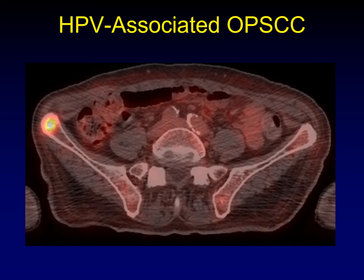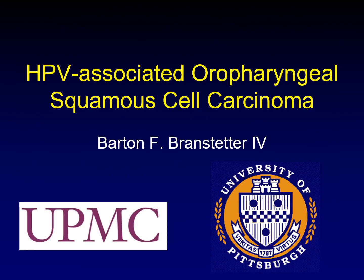Another unusual behavior of HPV-associated oropharyngeal squamous cell carcinoma is distant hematogenous spread to bone. This example shows disease in the pelvis as the only manifestation outside of T1N1 disease in the neck. There are a variety of ways that HPV-associated oropharyngeal squamous cell carcinoma differs from traditional HPV-negative oropharyngeal squamous cell carcinoma, and these differences are really important to understand for radiologists imaging these patients.